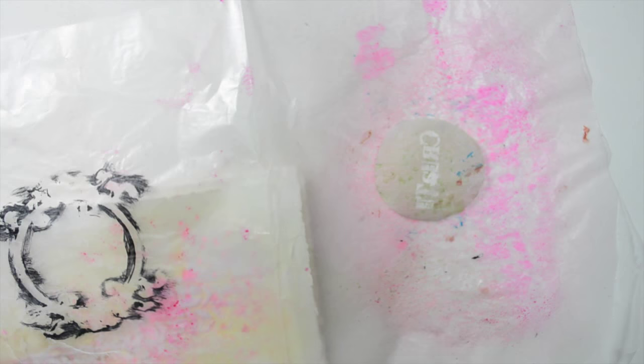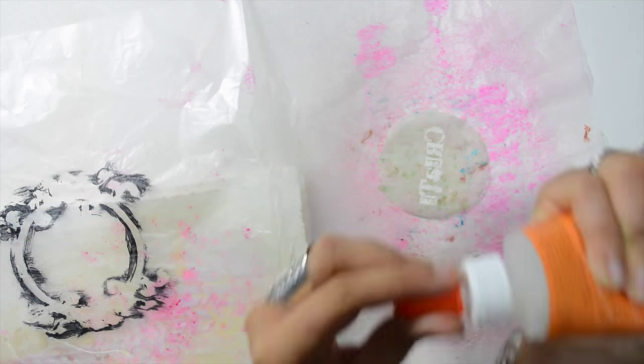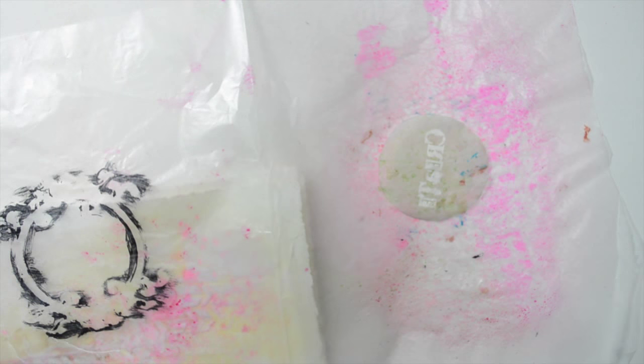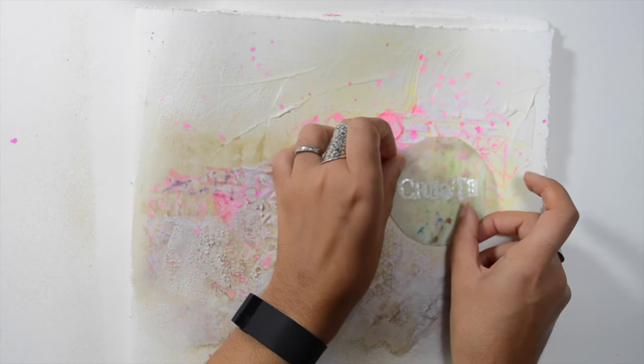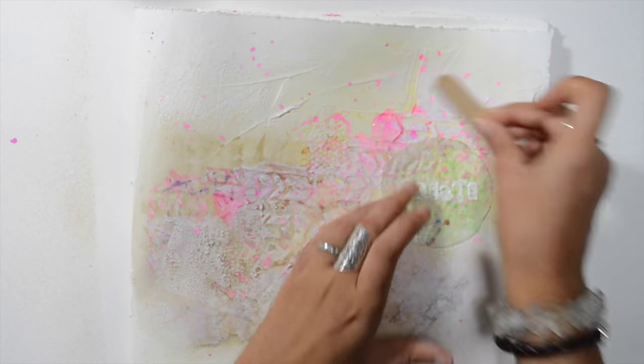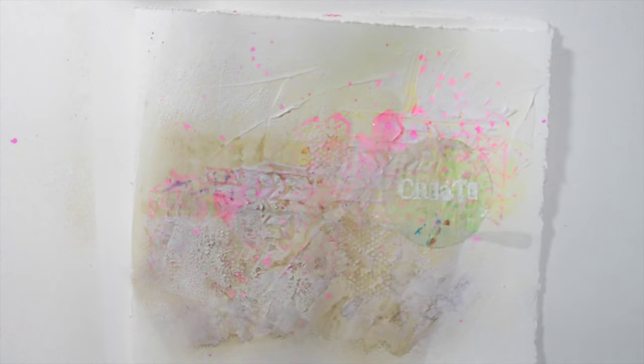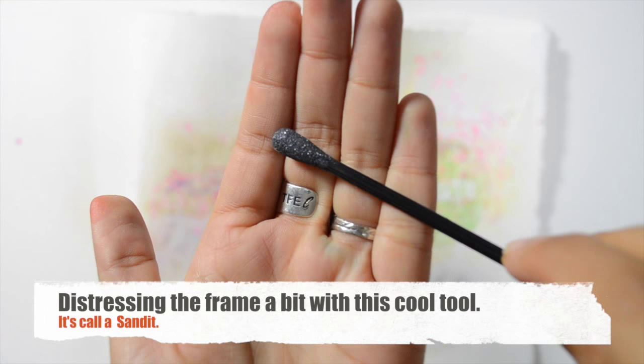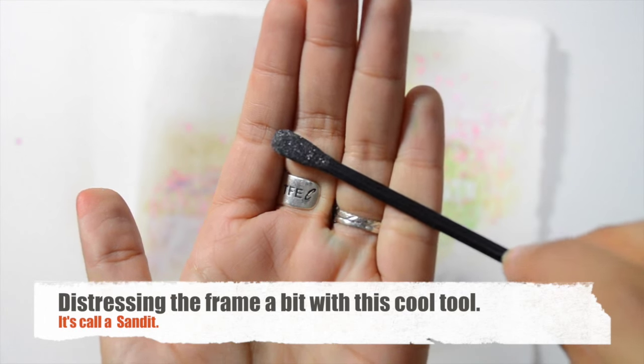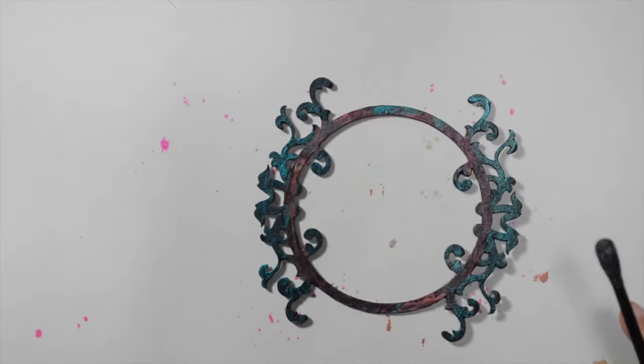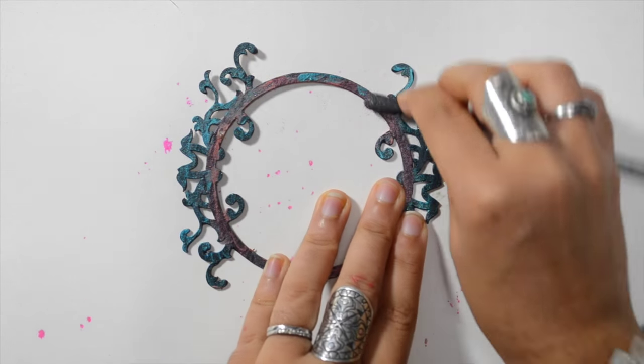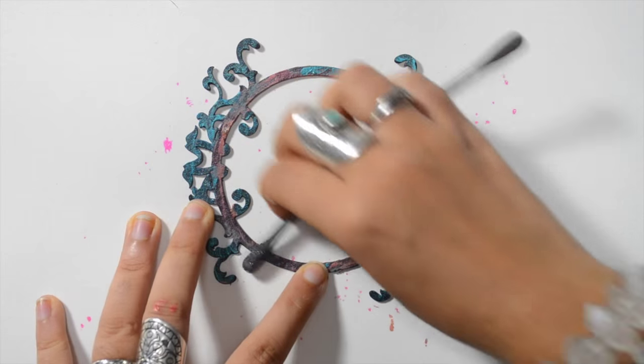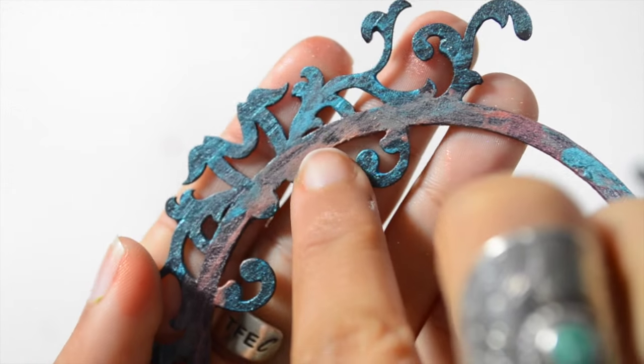You can use any glue you want. I use school glue, it's what I had on hand. Put it where the first one was before, trying to get rid of the bubbles. You can use an old credit card if you want. This little tool is called a Sanding, a sanding tool that looks like a Q-tip. I wanted to distress a little bit the frame. It's not obvious but look there.